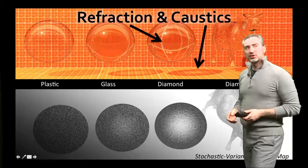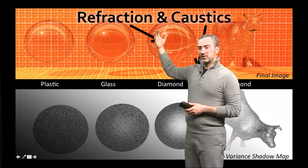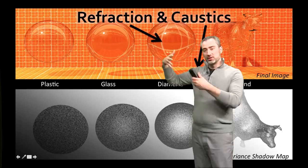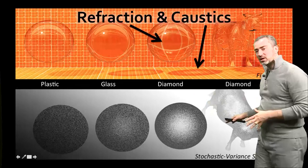For refraction and caustics, we show three different indices of refraction for the same shape: a plastic sphere, a glass sphere, and a diamond sphere — and then a diamond cow to show the same index with a different shape. You can clearly see the refraction of the background increasing with the index of refraction in the distortion of the orange lines, and as the index increases, the shadows show increasingly focused light.